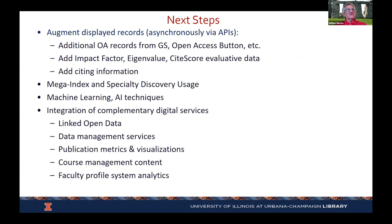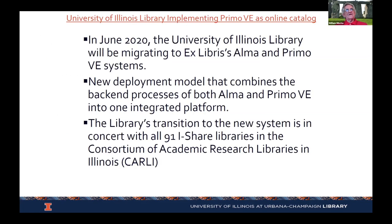There are a number of plans for next steps within Bento systems: mega indexes and especially discovery services like Dimensions and Lens. Tom is going to talk about machine learning and AI techniques. We still have a lot of complementary digital services to add: open data, data management services, publication metrics, visualizations, course management content, and faculty profile systems. I'm going to turn this over to Michael now, who's going to talk a little bit about our Primo implementation.